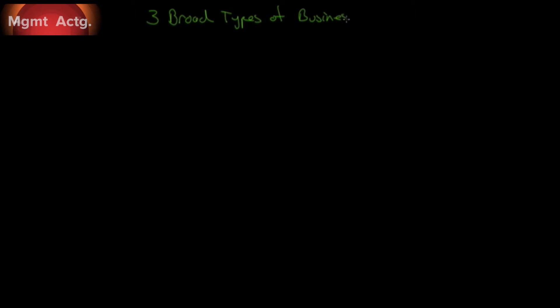In beginning Chapter 2, it's helpful to categorize the three broad types of business models we see out there — and of course, understand this is a broad categorization. We have manufacturing businesses. We also have merchandising businesses — Best Buy, for example, where they buy the product, put it on shelves, and sell it out the door. Manufacturing is typified by General Motors; they make something. And then you have service-oriented businesses: law firms, dentists, things like that.